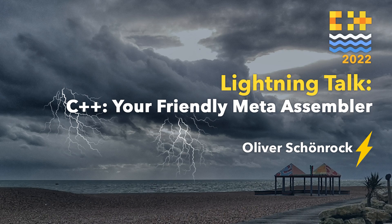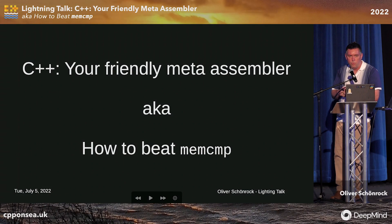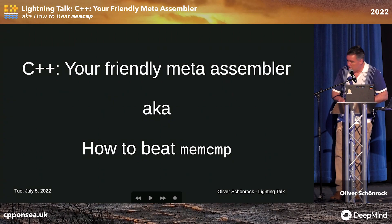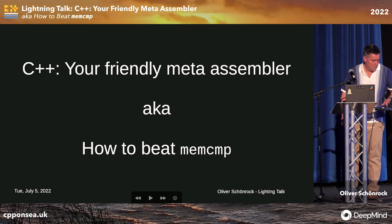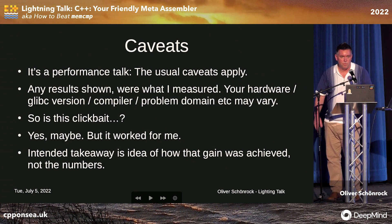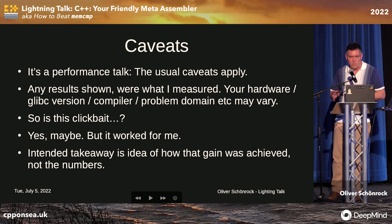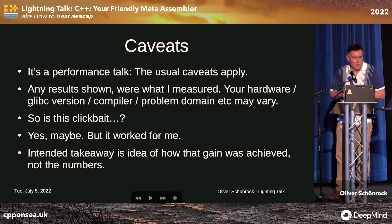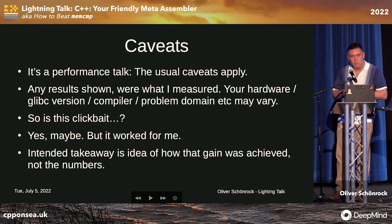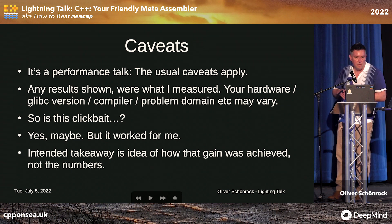We had a little performance issue. I'm going to present a toy example, but hopefully a meaningful one. Caveats first — this is a performance talk, so mileage may vary, your situation will be different. There'll be some results at the end; I'm not claiming those will be accurate in your situation. This might be a clickbait situation, because I'm claiming to beat glibc, which I'm sure is not true in general — there are people much smarter than me who have written that code.